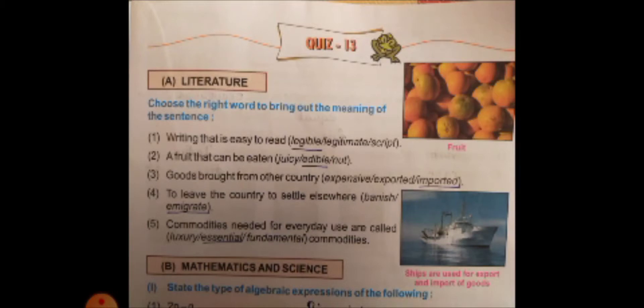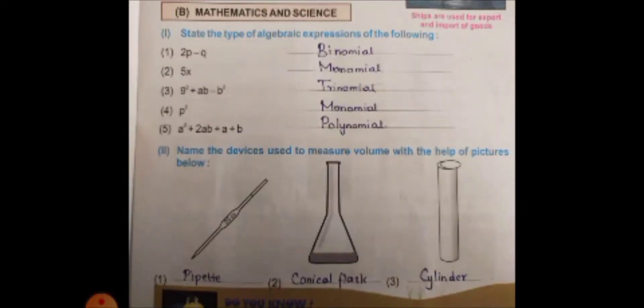Commodities needed for everyday use are called essential commodities. Food is our essential, water is our essential, and air is our essential — these are our essential commodities.